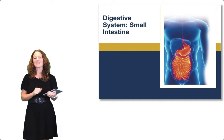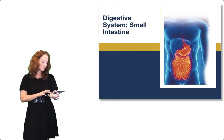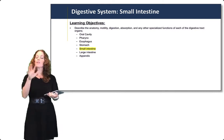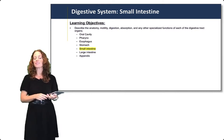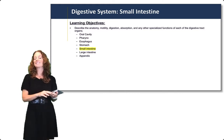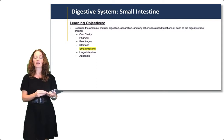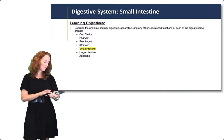In this lecture we will talk about the small intestine. We're moving our way through the digestive tract. We've already finished up the oral cavity, pharynx, esophagus, and stomach, and now we're going to get to the primary organ of digestion and absorption, the small intestine.